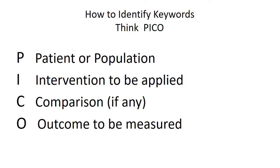A handy mnemonic for thinking about how to search our library databases is PICO. The P stands for a population of interest, the I is an intervention that you want to apply, the C is comparison if there is one, and the O's are the outcomes to be measured.